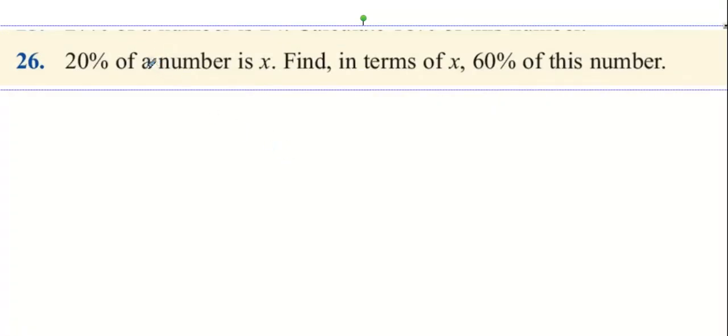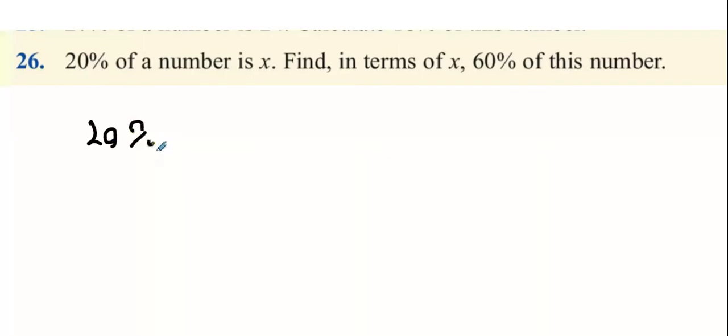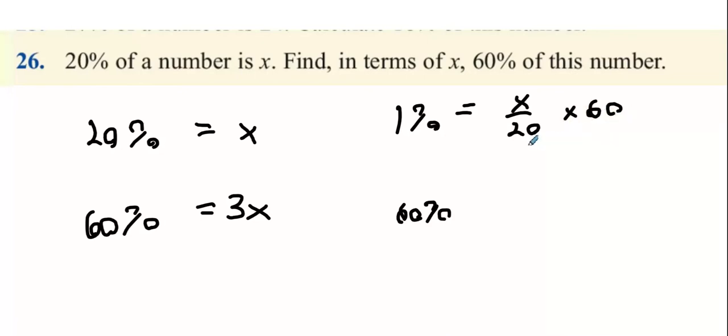Question 26: 20% of a number is X. Find in terms of X, 60% of the number. Well, 60% is three times bigger than 20%, so it's 3X. The other way would be to say 1% is X over 20, and 60% is X over 20 multiplied by 60, which is still 3X.